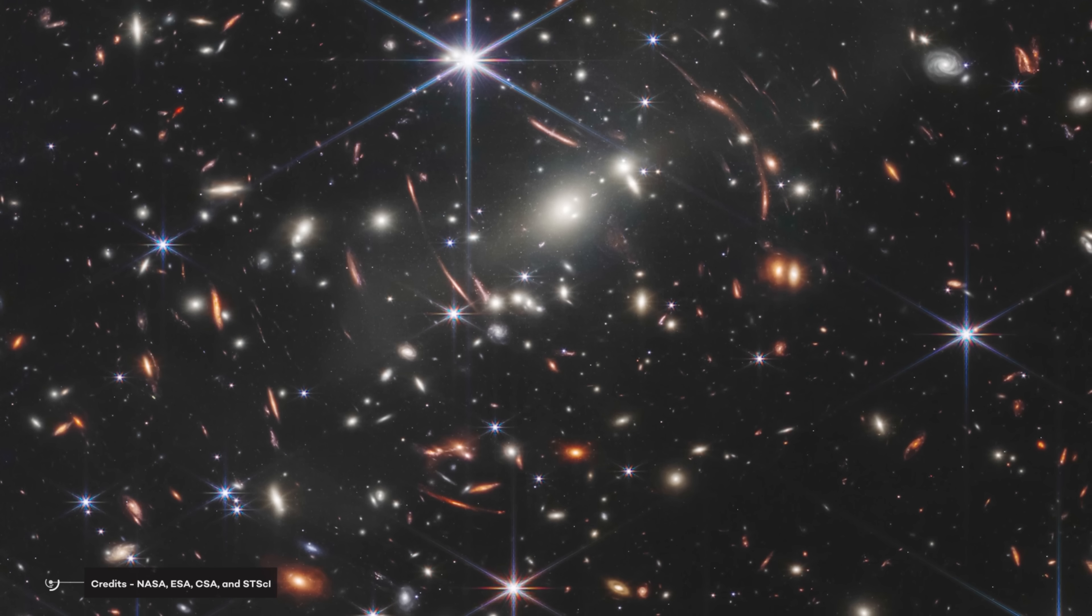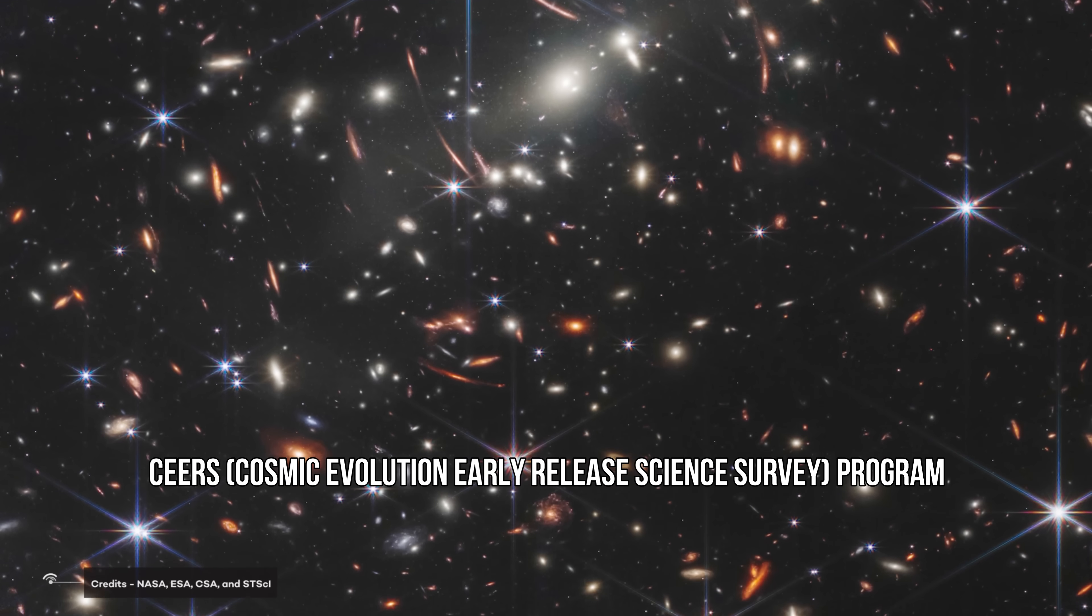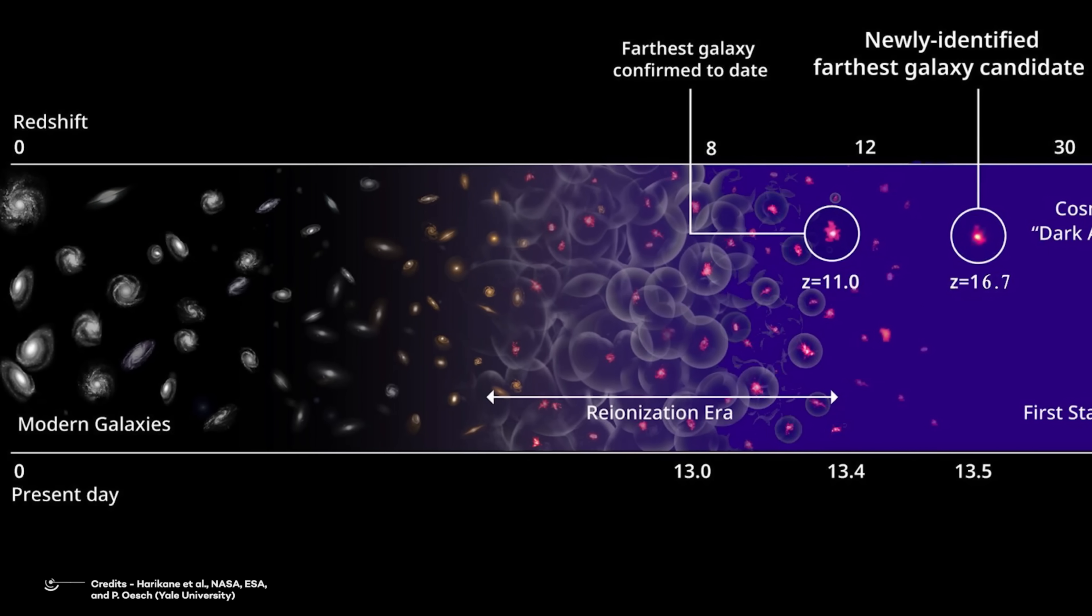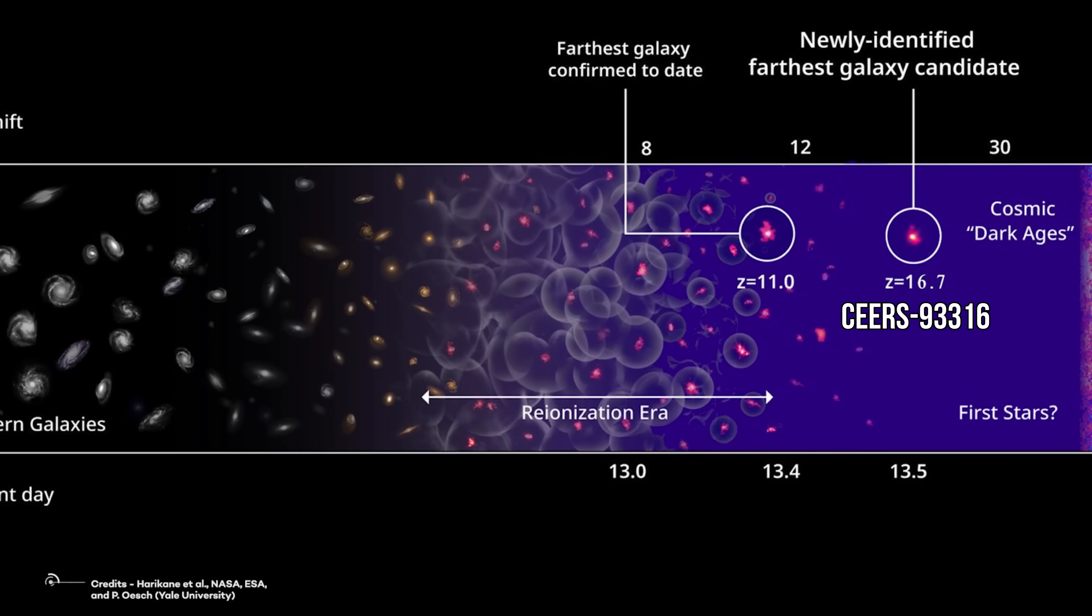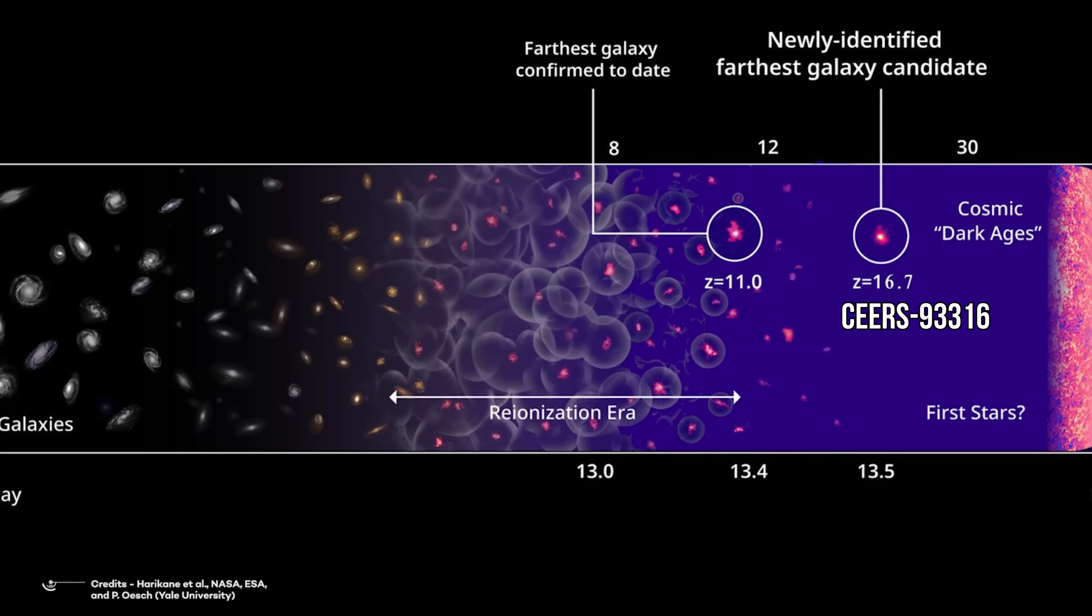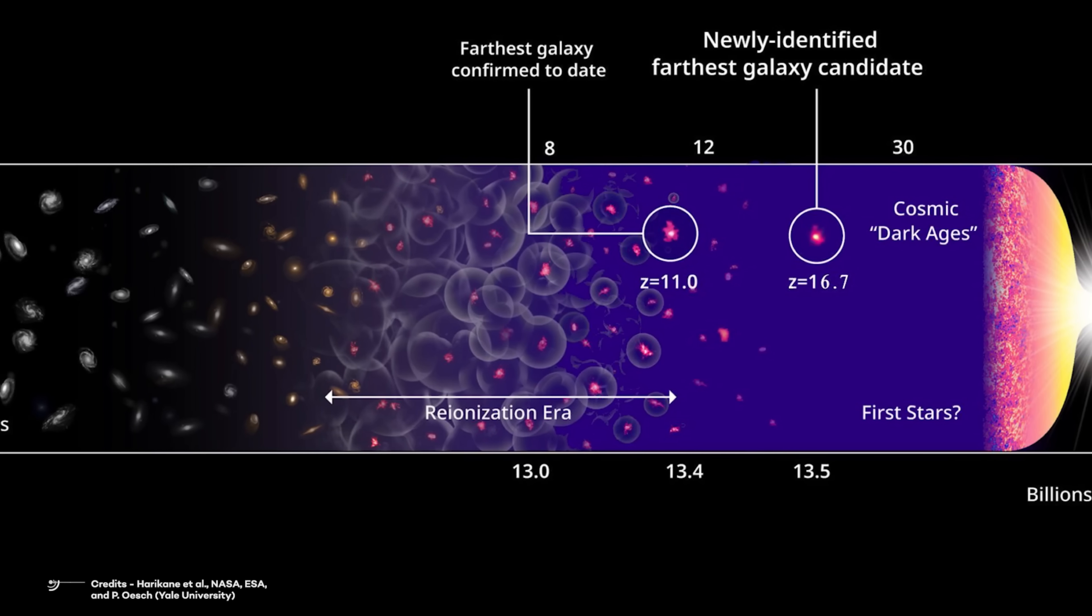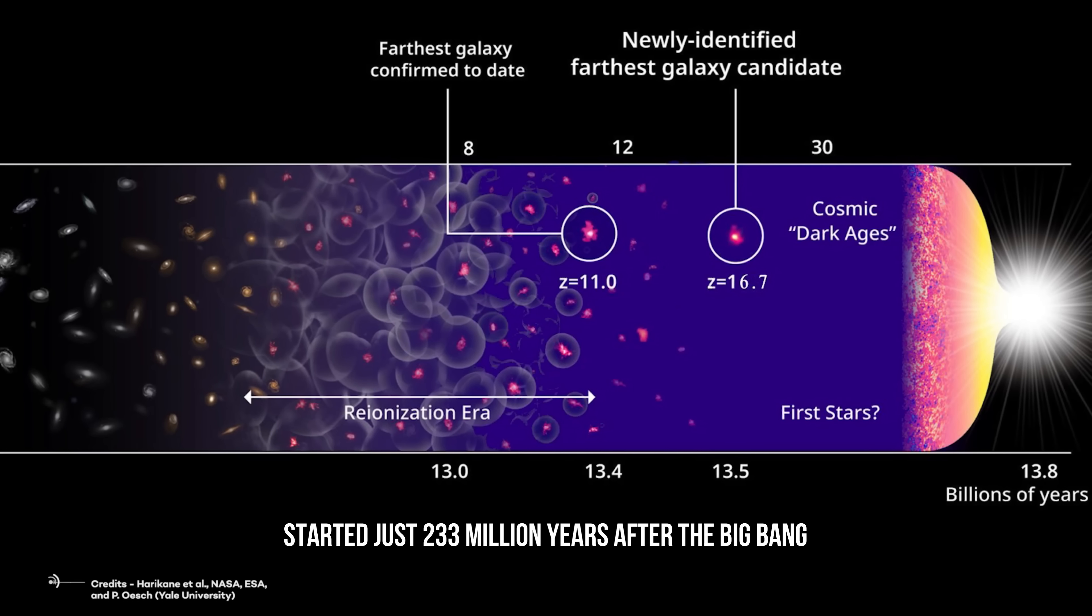A few days passed, and as part of the Sears Cosmic Evolution Early Release Science Survey program, the HD1 record was even shattered with the discovery of a galaxy Sears 93316, showing a Z of 16.7. Such a high redshift tells us that the galaxy light collected by Webb may have started just 233 million years after the Big Bang.